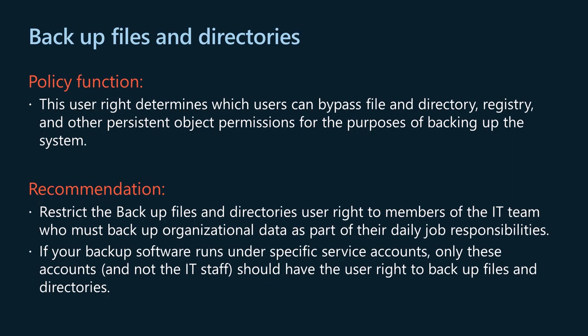The backup files and directories policy determines which users can bypass file, directory, registry, and other persistent object permissions for the purposes of backing up the system. This user right is effective only when an application attempts access through the NTFS backup application API; otherwise, standard file and directory permissions apply. This user right is similar to granting traverse folder/execute file, list folder/read data, read attributes, read extended attributes, and read permissions to all files and folders on the system. Default security principals with this right on workstations and servers are administrators and backup operators. Restrict this user right to IT team members who must back up organizational data as part of their daily job responsibilities.